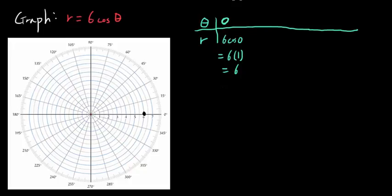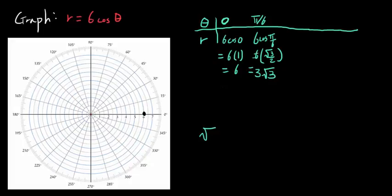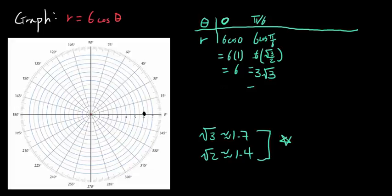When theta is pi over 6, or 30 degrees, you're going to get r equals 6 times cosine of pi over 6, where cosine of pi over 6 is square root of 3 over 2. So 6 times square root of 3 over 2 is 3 times square root of 3. Square root of 3 is about 1.7, so 3 times 1.7 is about 5.1. So when theta is pi over 6, we're going to go about 5.1.